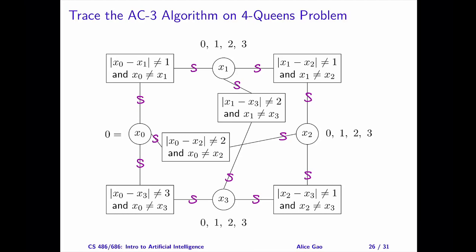Step 1. Let's remove the arc between x0 and x1, where x1 is the primary variable. Is this arc consistent? If x1 is 0, then x0 equals 0 violates the row constraint. If x1 is 1, then x0 equals 0 violates the diagonal constraint. If x1 is 2, x0 equals 0 satisfies both constraints. Therefore, this arc is not consistent.